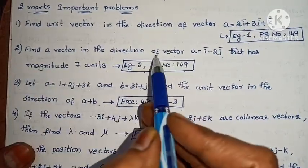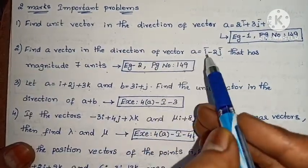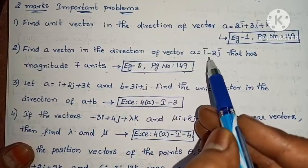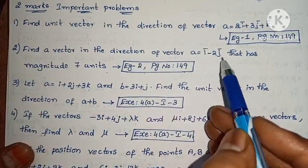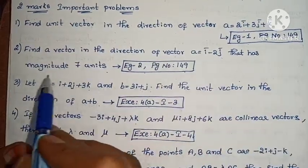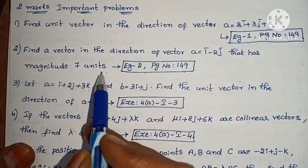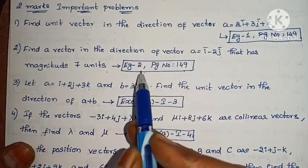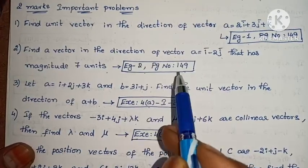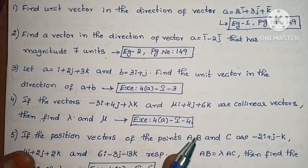Next: Find a vector in the direction of vector a equals to i minus 2j, that has magnitude 7 units. Example 2, page number 149.